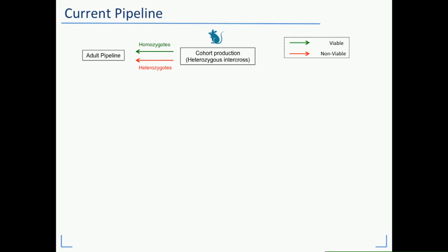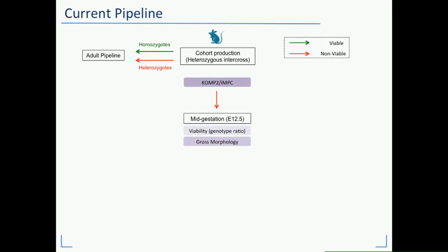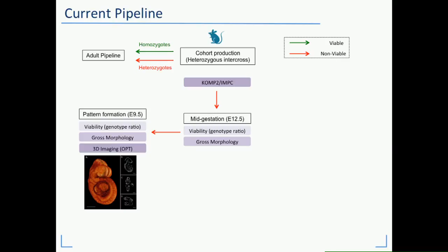In order to characterize these embryonic lethal phenotypes, we built an entire pipeline. For the IMPC and the Comp2 program, we start at a mid-gestation screen where we identify first whether we're achieving embryos with the right genotype ratio and assess gross morphology. If they are lethal at this stage, we jump back to an earlier stage at E9.5 and assess viability and gross morphology, but also add a high-resolution 3D imaging modality that allows us to collect very rich data sets.